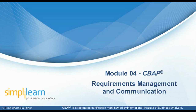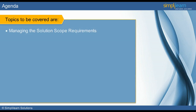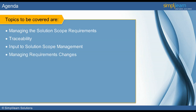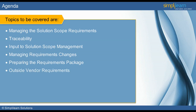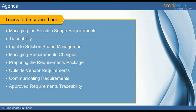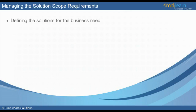Let us look into the agenda of this module. We will start with finding out how to manage the solution scope requirements. Next, we will discuss the ability to trace back to the origins of the roots of the findings — this is called traceability. An input to the solution scope management is the next topic to be discussed. This will be followed by understanding how to manage the requirement changes. We will then discuss how to prepare the requirements package. Outside vendor requirements will be dealt with next, followed by communicating requirements and approved requirements traceability. Finally, we will look into a structured walkthrough.